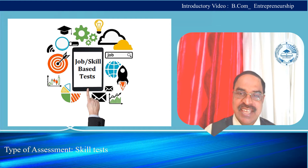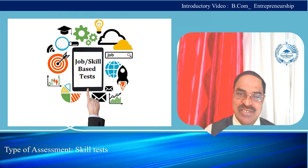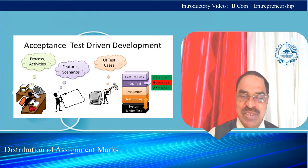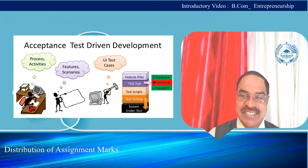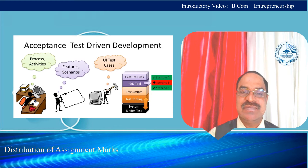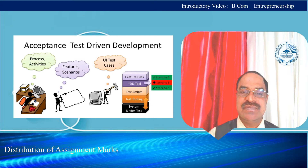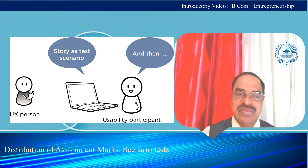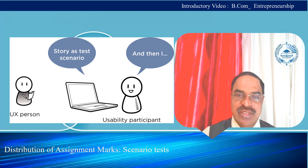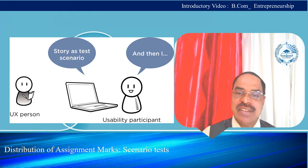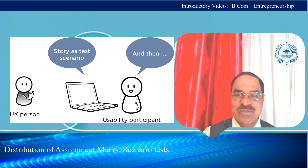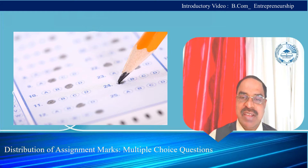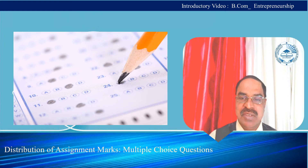The assessments are skill-based. The distribution of marks is as follows: 75 marks for the term-end examination and 25 marks are allotted for the assignment based on internal marks. The internal marks of 25 are distributed as follows: for the scenario test, 10 marks are allotted. Three tests will be conducted and the best two test marks will be considered. For multiple choice questions, two tests will be conducted and the best mark will be considered.